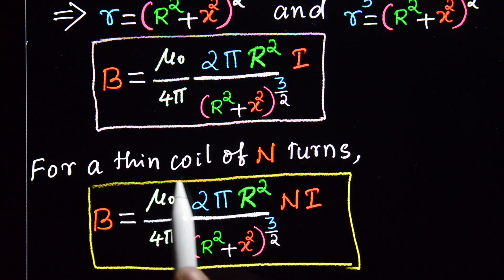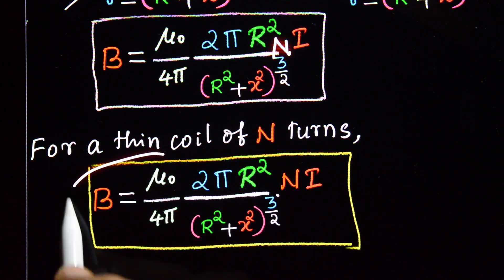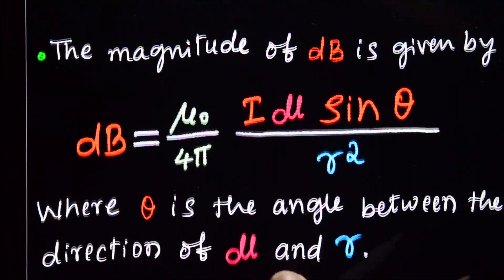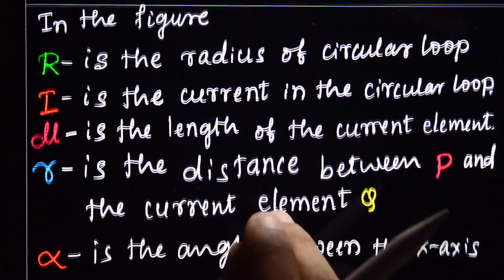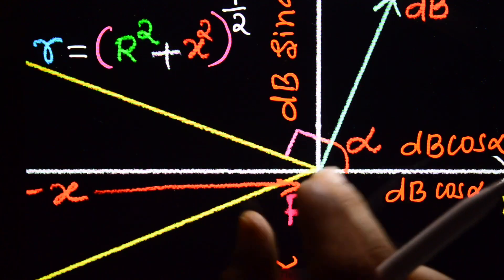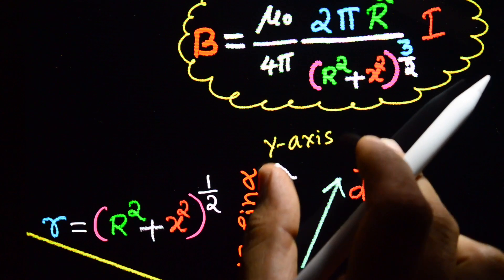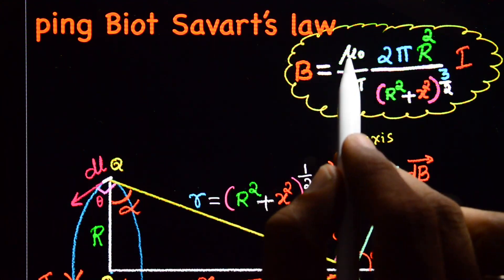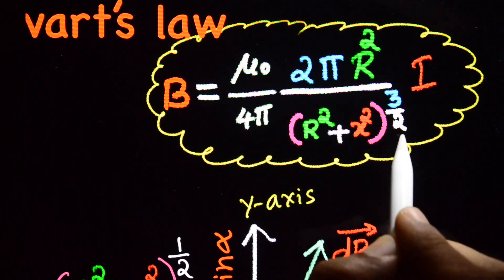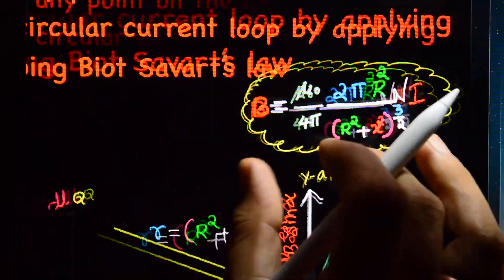If the loop consists of N number of turns, everything is the same and the expression for magnetic field due to a current-carrying circular loop becomes B = (μ₀/4π) × (2πR²) / (R² + X²)^(3/2) × N × I.